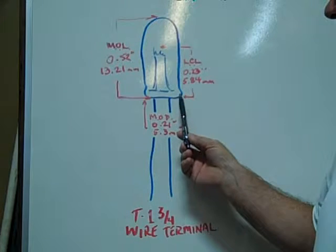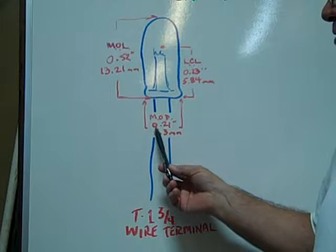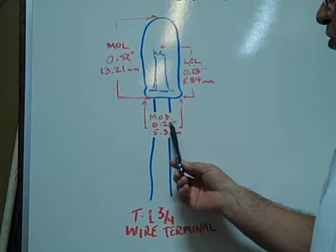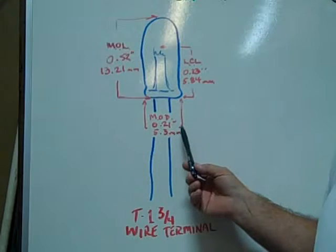The maximum outer diameter of the glass envelope is 0.21 inches, 5.3 millimeters.